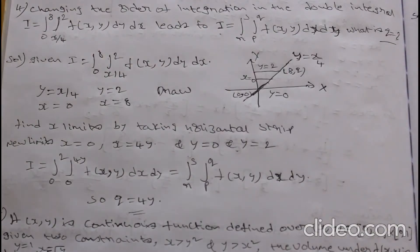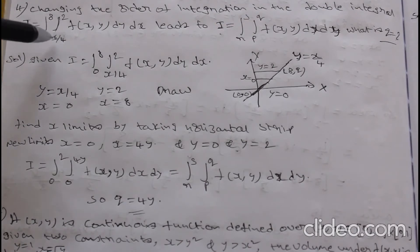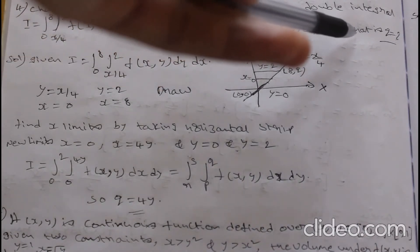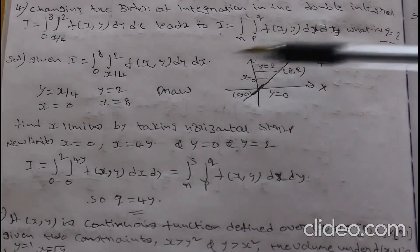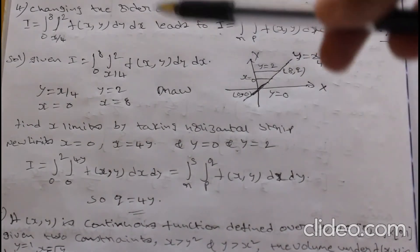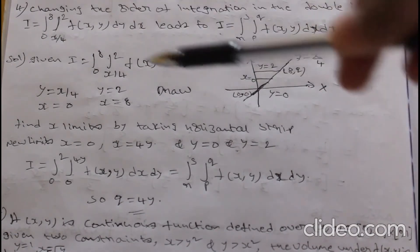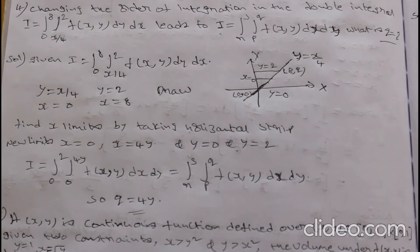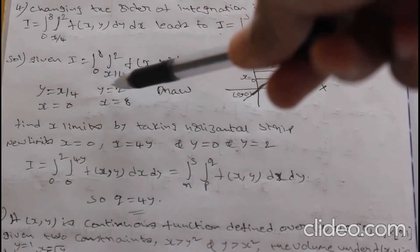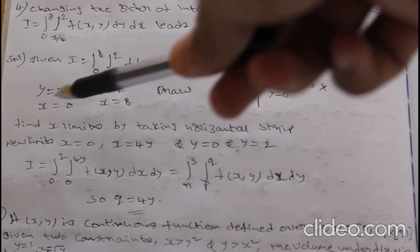Question four: changing the order of integration. I = ∫₀⁸ ∫_{x/4}^{2} f(x,y) dy dx leads to I = ∫ᵣˢ ∫ₚᵠ f(x,y) dx dy. What is q? The y limits are y = x/4 and y = 2, and x limits are x = 0 to x = 8.